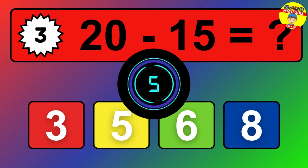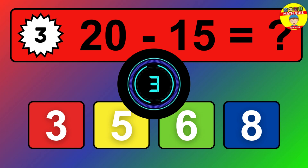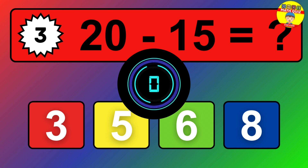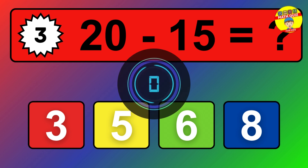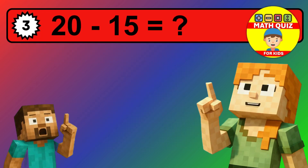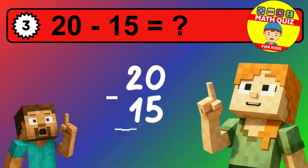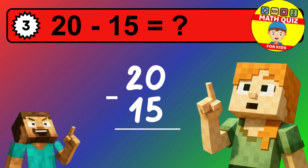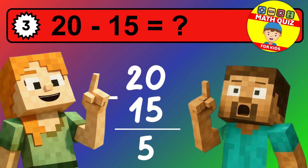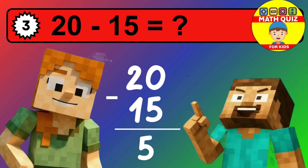We start with the units. 0 minus 3 is not possible, so we need to regroup. We take one 10 from the tens column. Now we have one tens, and the units become 10. Now we subtract. 10 minus 3 is 7. Then we go to the tens. 1 minus 1 is 0. The final answer is 7.